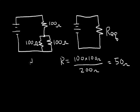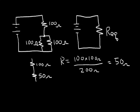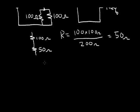So we can substitute 50 ohms for the two 100-ohm parallel resistors. When we do that, we get 100 ohms in series with a single 50-ohm resistor. We know that resistors in series add, so the equivalent resistor R_eq is equal to 150 ohms.